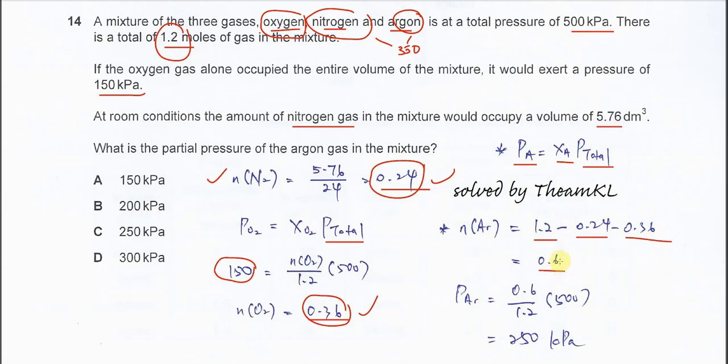Again, use Dalton's law. 0.6 over 1.2 - this is the mole fraction, which is one-half - times the total pressure of 500. We get 250 kilopascals. Therefore, the answer is C.